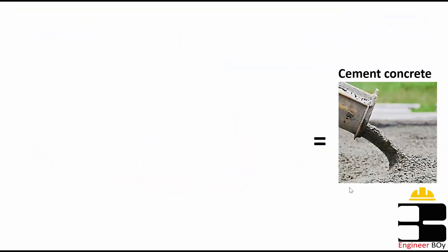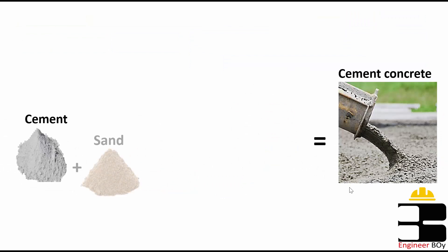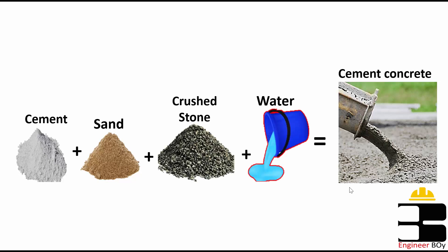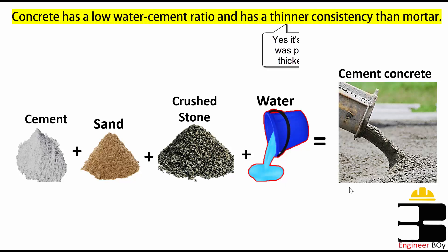Concrete is a mixture of binding material like cement and fine aggregates like sand, just like mortar. However, concrete also has coarse aggregates such as crushed stone or gravel, and that makes it stronger and more durable. Concrete has a low water-cement ratio and has a thicker consistency than mortar.